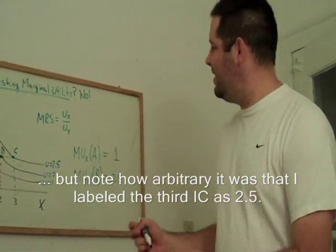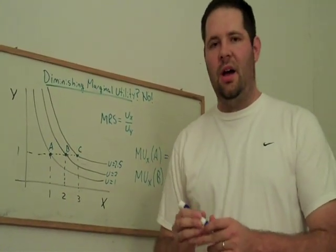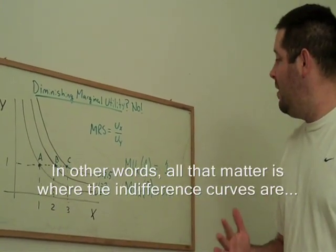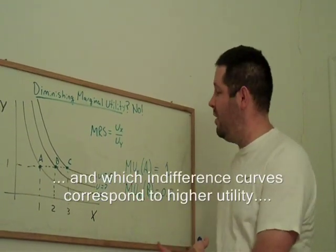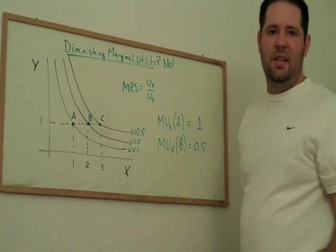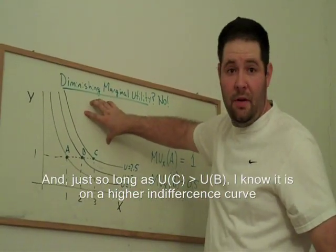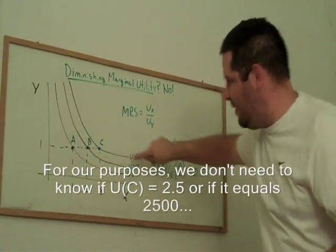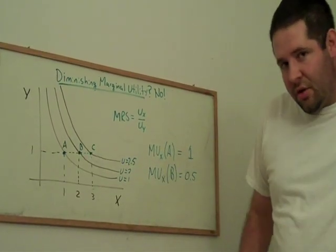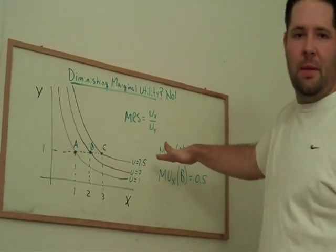But notice that this doesn't have to be the case. Remember, these are just ways of ordering the bundles on the indifference curve map. The labels on indifference curves have no content for actual behavior. If an indifference curve is here, it tells me precisely how to rate bundle C relative to every other bundle — bundles above and to the right are preferred, those on the curve are equally good, and those below are worse. That's all we really need to know.